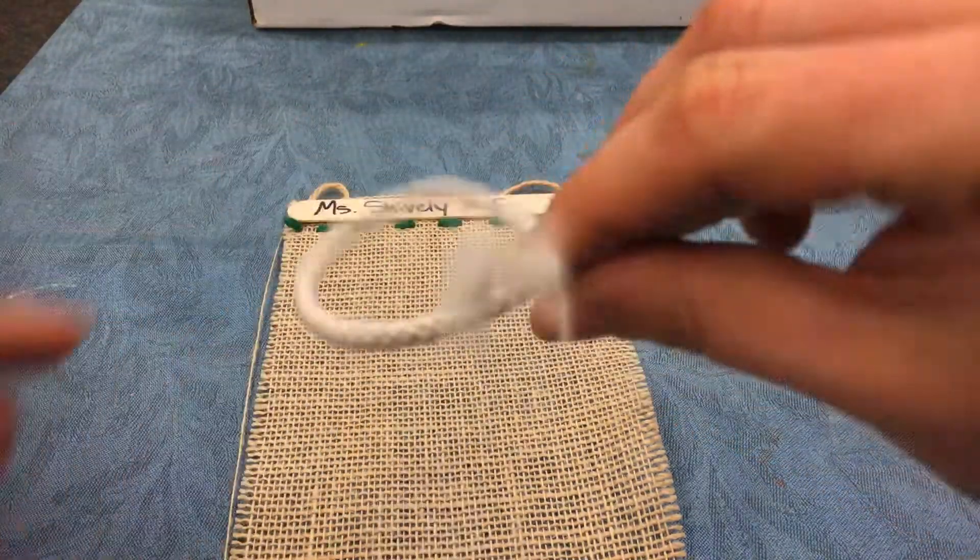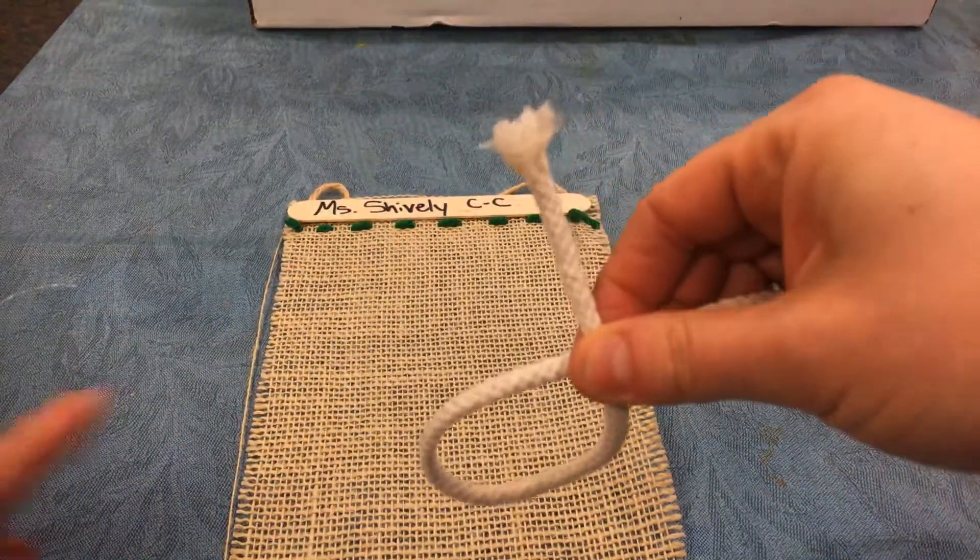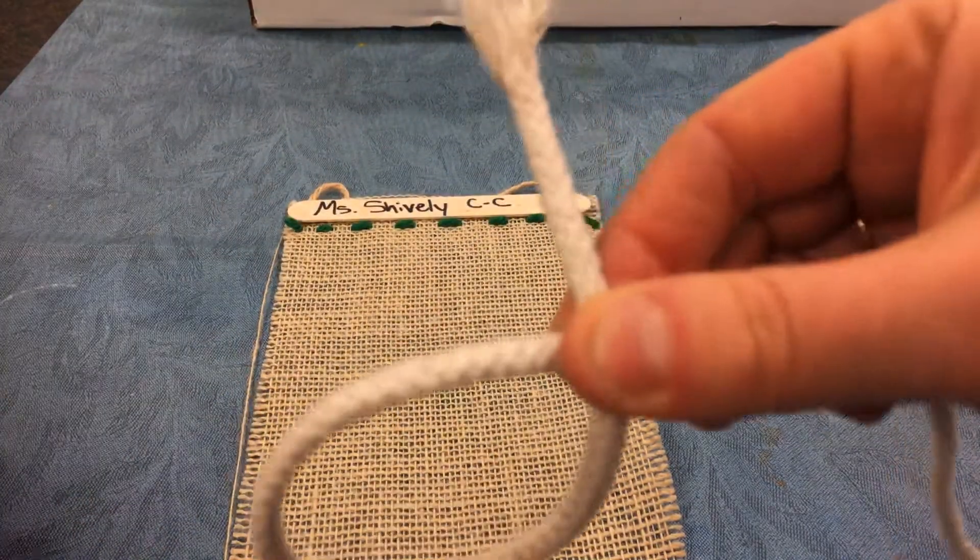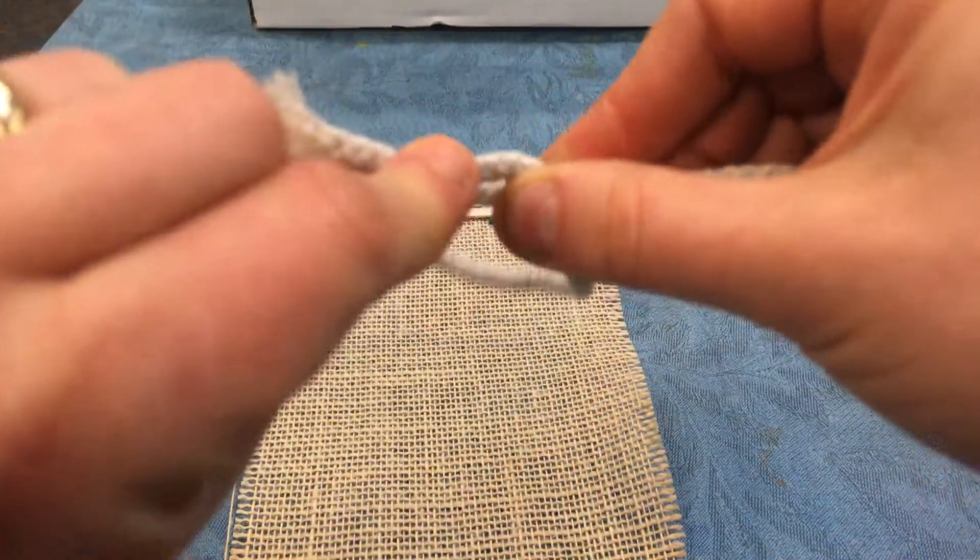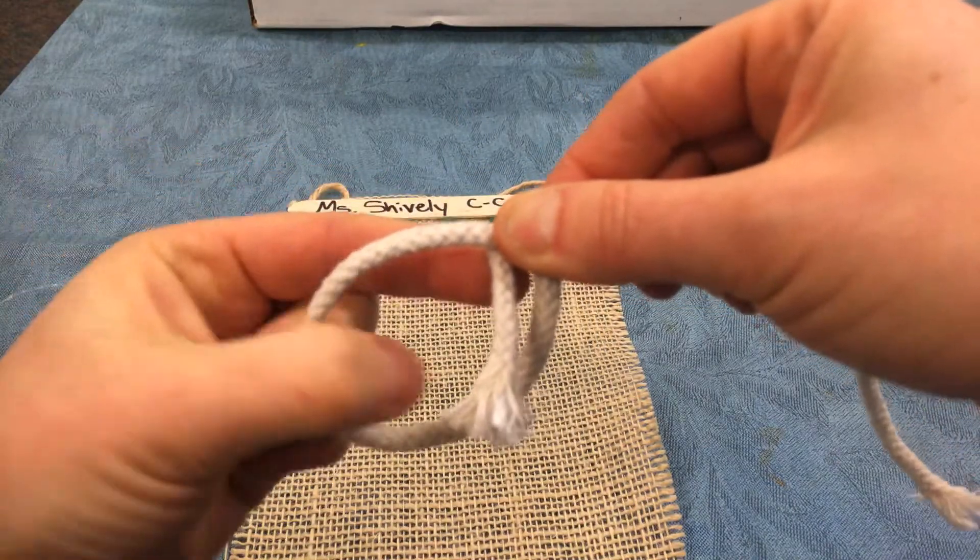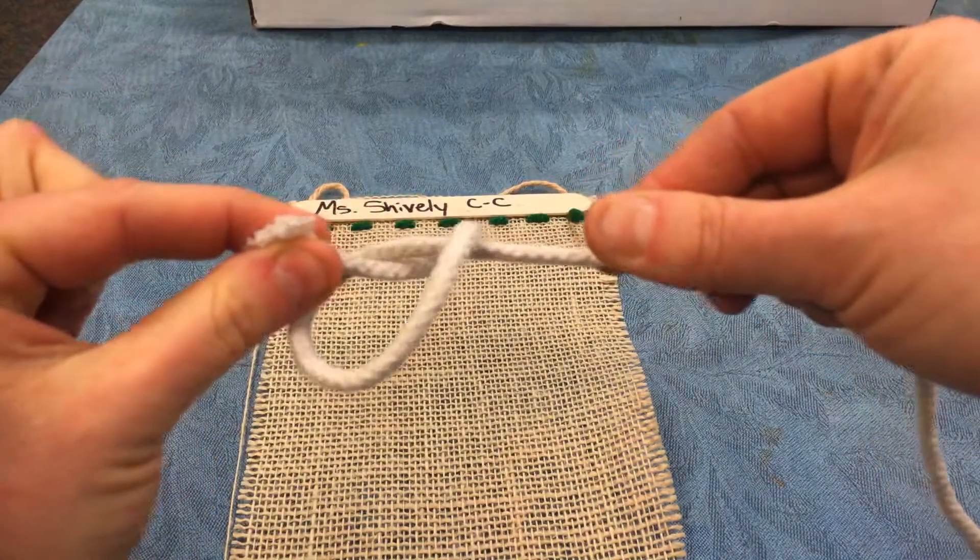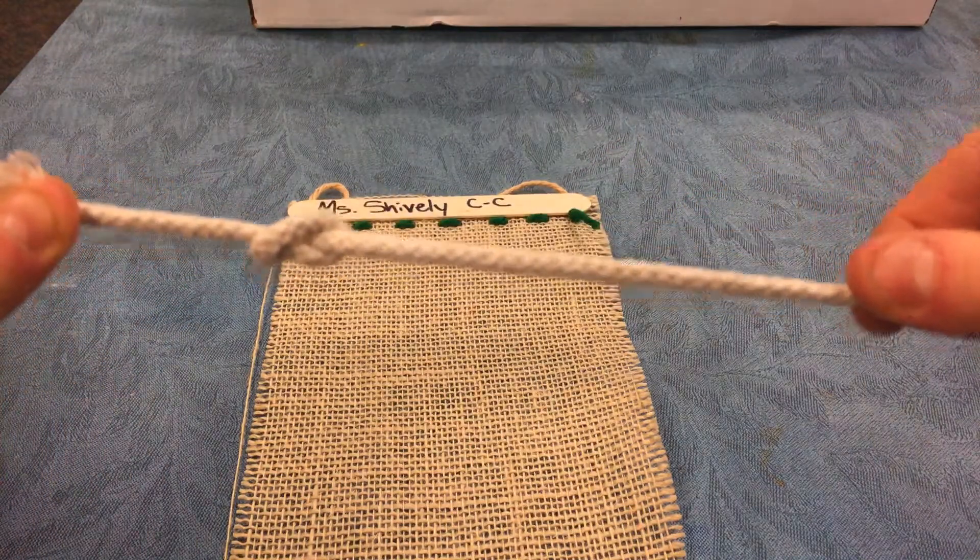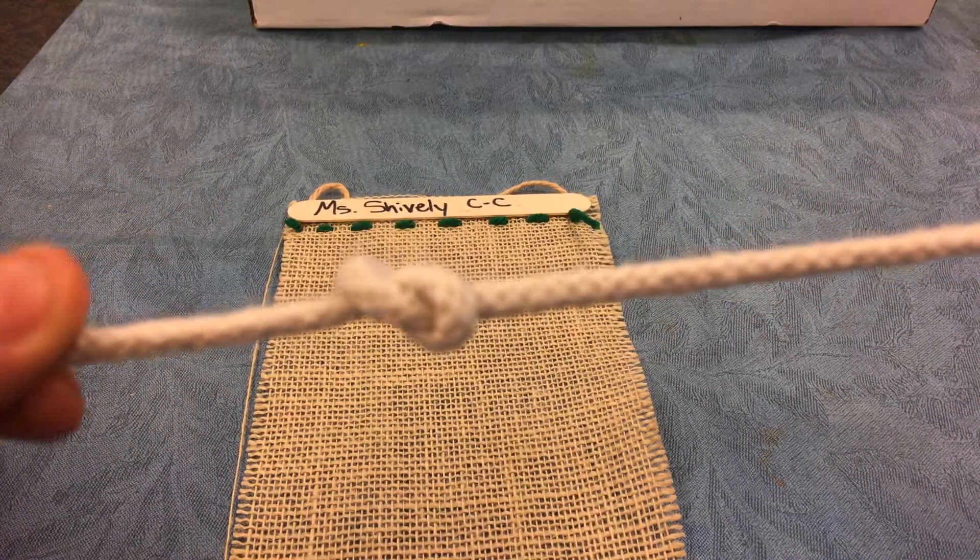I'm pinching it between my thumb and my pointer finger. I'm just pinching it. I've got a nice long tail. Then I'm taking the tail and I'm going around and through. Then I'm pinching that tail and I'm pulling it until I make my knot. Just like that.